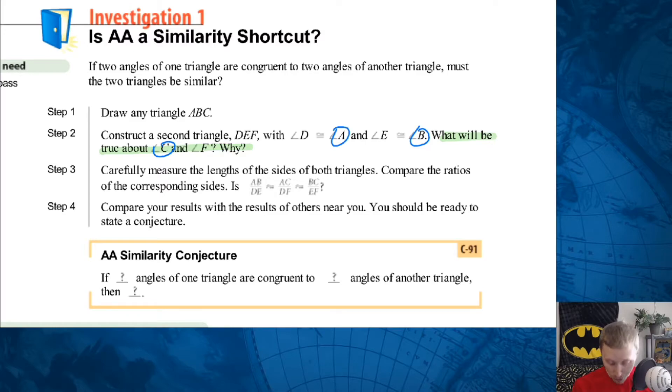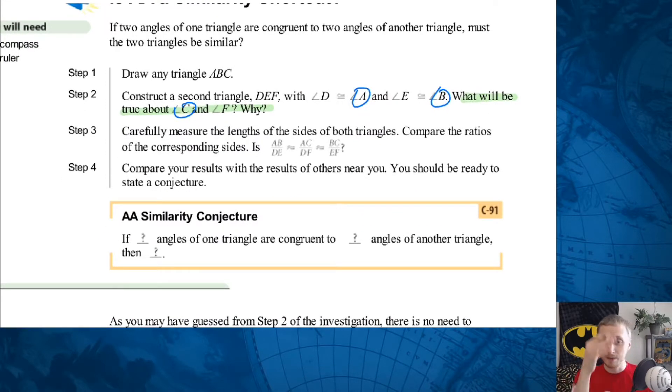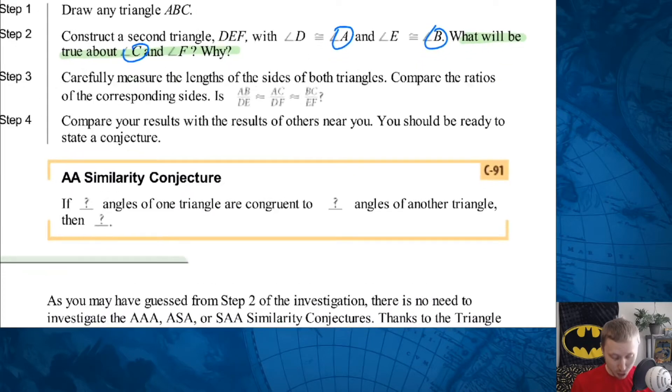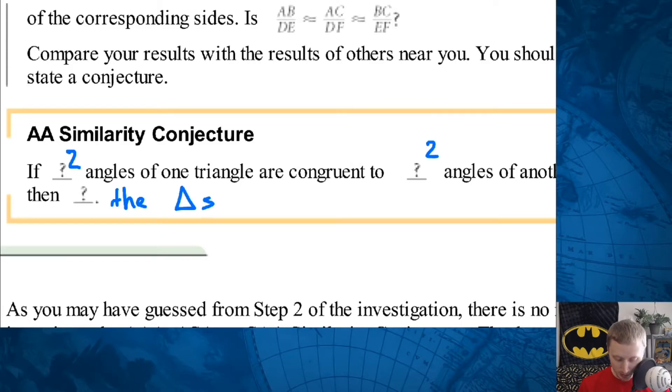Which means any ratio you make of those sides is also going to be proportional. The ratios will be equal or similar. They will be proportional, the same ratio, because we know as the angles go in a triangle, the sides also follow. A small angle is across from a small side, a big angle is across from a big side. So yes, it should make sense that two angles is enough to say that the triangle is congruent. So let's fill in our conjecture here. If two angles, let me get a little bit bigger pen here, that shows up. If two angles of one triangle are congruent to two angles of another triangle, then what happens? The triangles are similar.